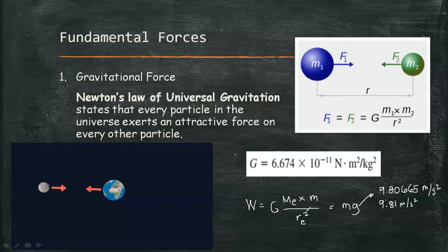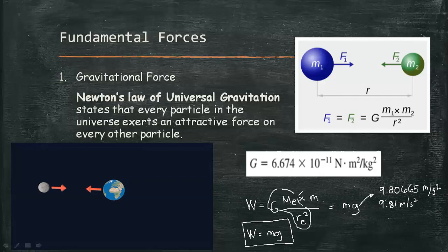For a body on the surface of the Earth, or close enough to the surface that we may regard the radius of the Earth as approximately constant, we arrive at the formula: weight equals mass times gravitational pull. This formula is not applicable when a body is at high elevation. It is also the formula used to find gravitational pull on the moon or another planet.